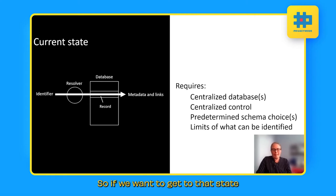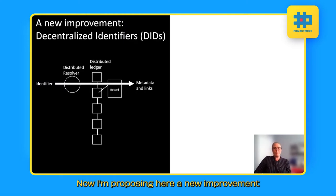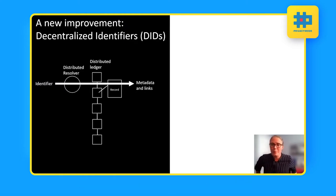So if we want to get to that state of the PID graph, be able to unambiguously connect from object to object, we need to be able to describe many different types of objects. Now, I'm proposing here a new improvement for persistent identifiers, and that is the idea of decentralized identifiers.